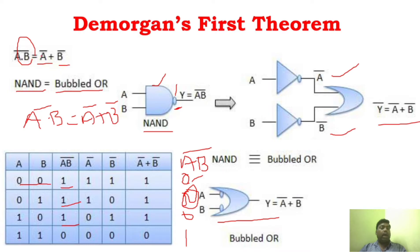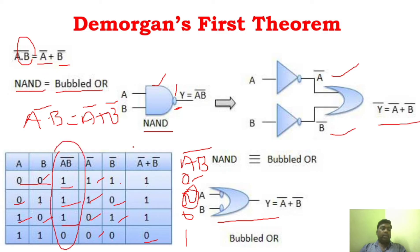We have to prove that this equals Ā + B̄. First find Ā — the complement of A: 0 becomes 1, 0 becomes 1, 1 becomes 0, 1 becomes 0. So Ā is 1, 1, 0, 0. Similarly B̄: 0 becomes 1, 1 becomes 0, 0 becomes 1, 1 becomes 0. So B̄ is 1, 0, 1, 0. Now sum them: 1+1=1, 1+0=1, 0+1=1, 0+0=0. So Ā + B̄ is 1, 1, 1, 0. You can see that this expression equals the previous expression. So this is De Morgan's first theorem — the complement of a product is equal to the sum of the complements of the individuals.